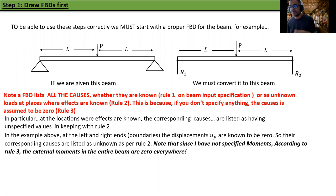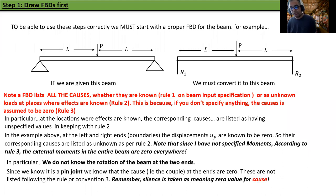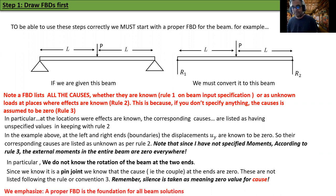Note that since I have not specified moments anywhere in the beam, according to Rule 3, the external moments in the entire beam are zero everywhere. In particular, we do not know the rotation of the beam at the two ends, but since it's a pin joint, we know the couple at the ends is zero — and we don't have to say anything, because saying nothing means we have specified zero value for the cause. Remember: silence is taken as meaning zero value for the cause. A proper free body diagram is the foundation for all beam solutions.